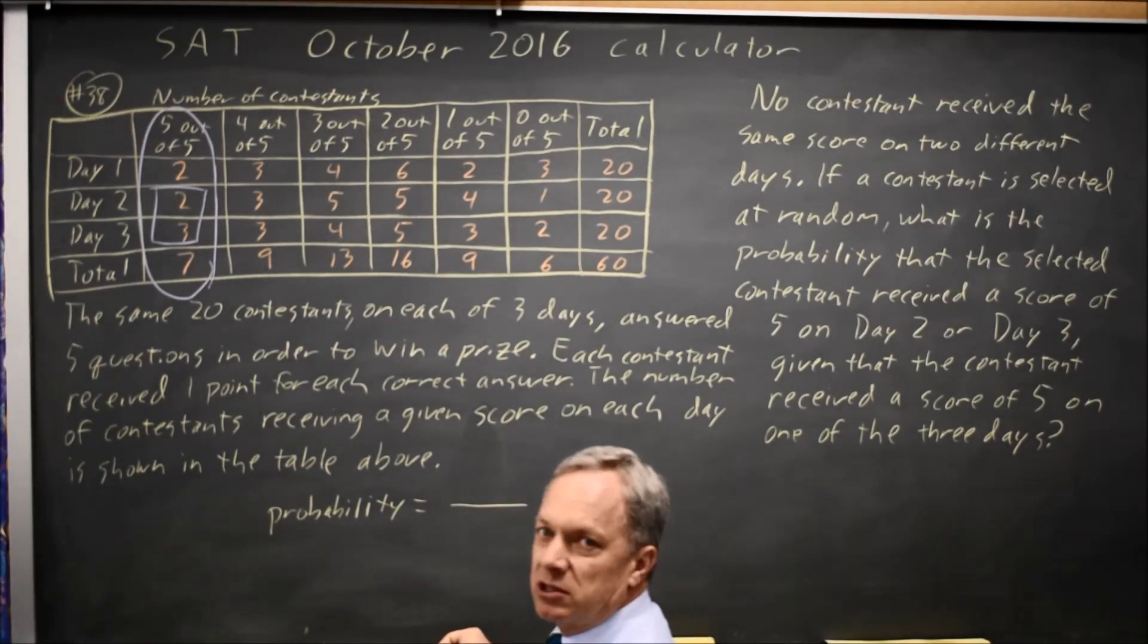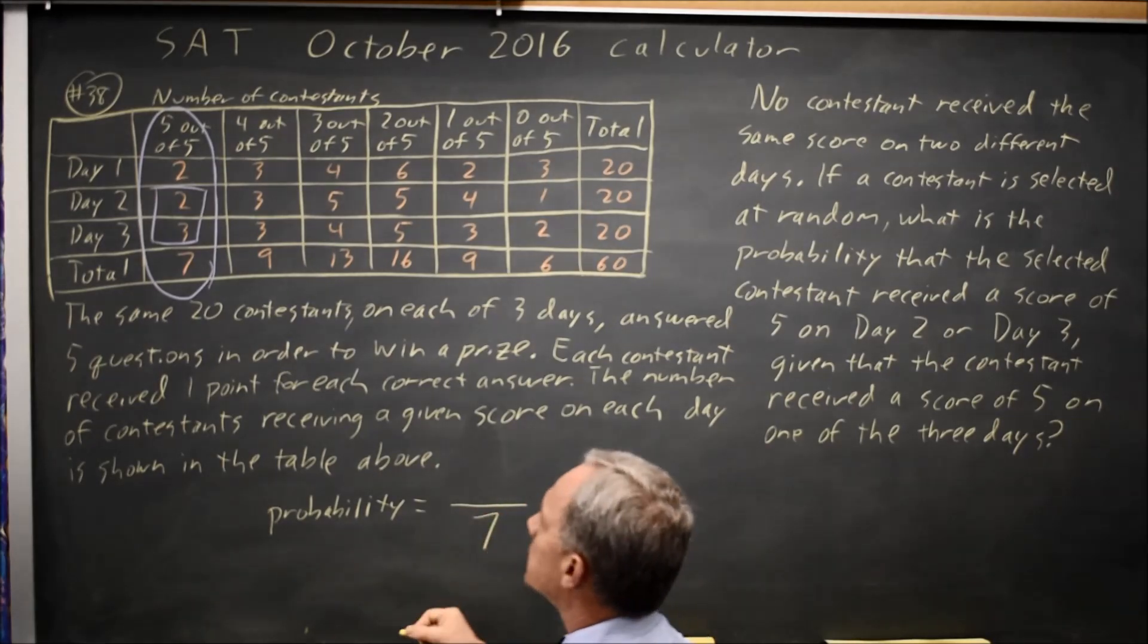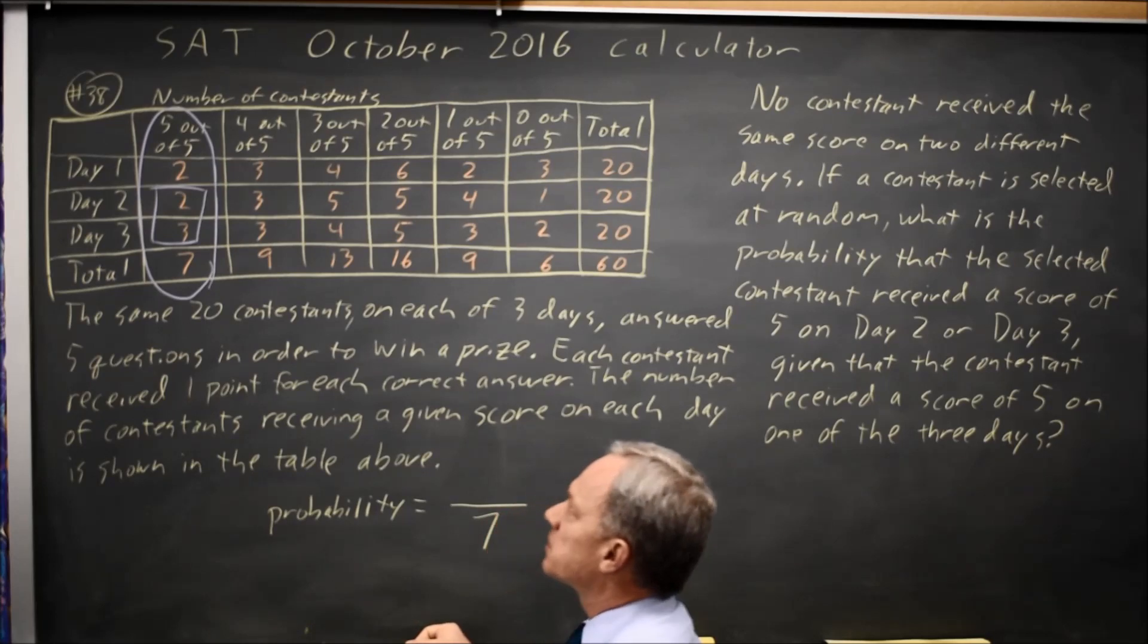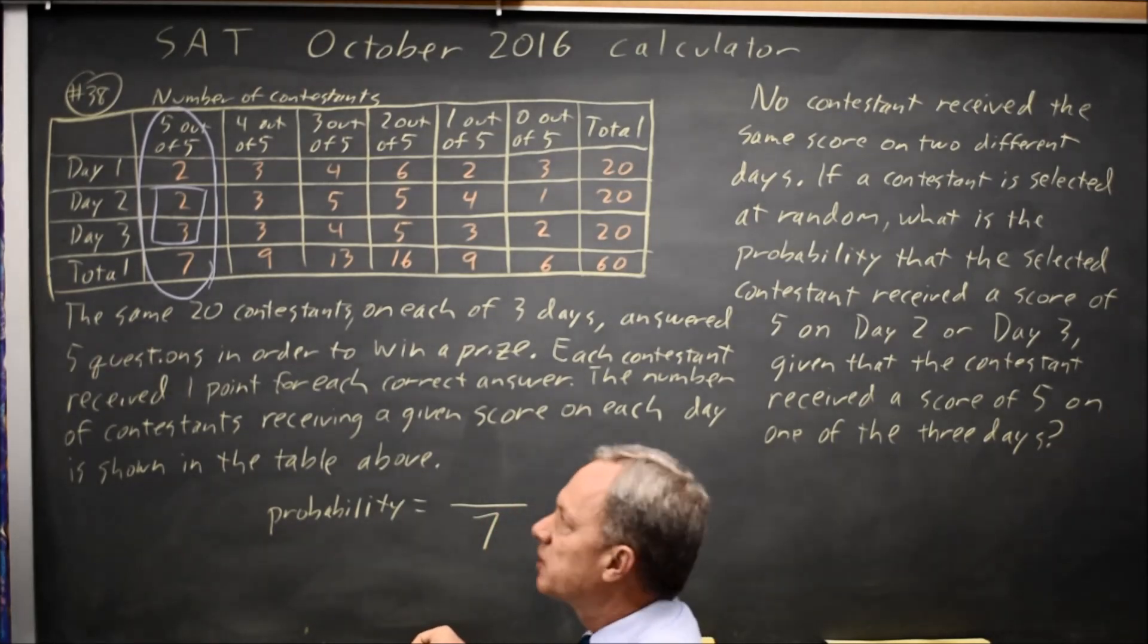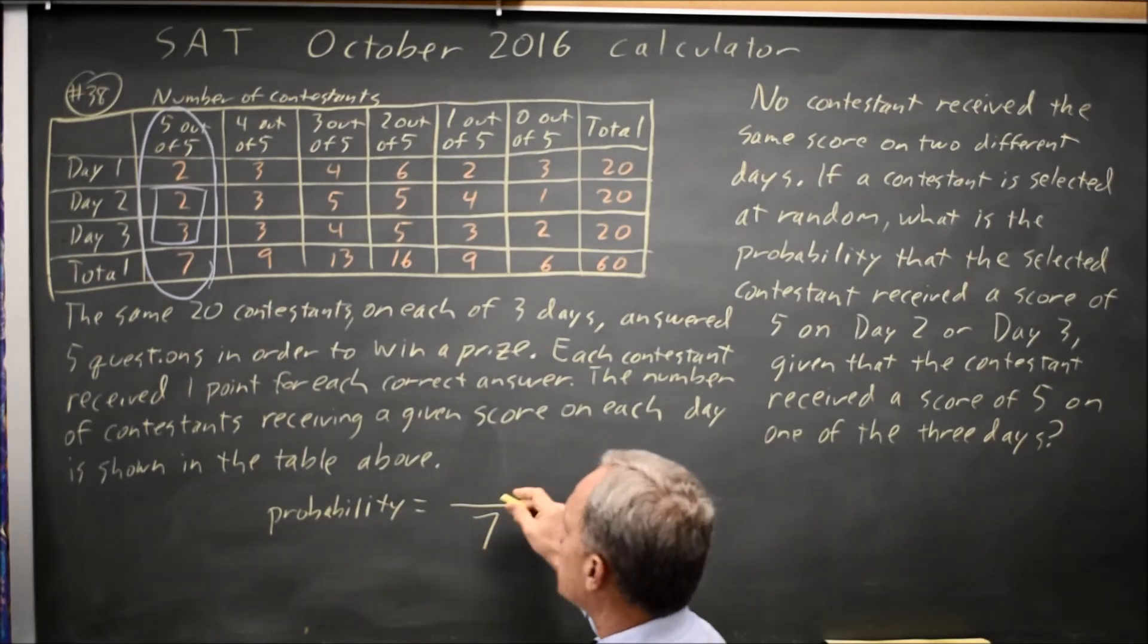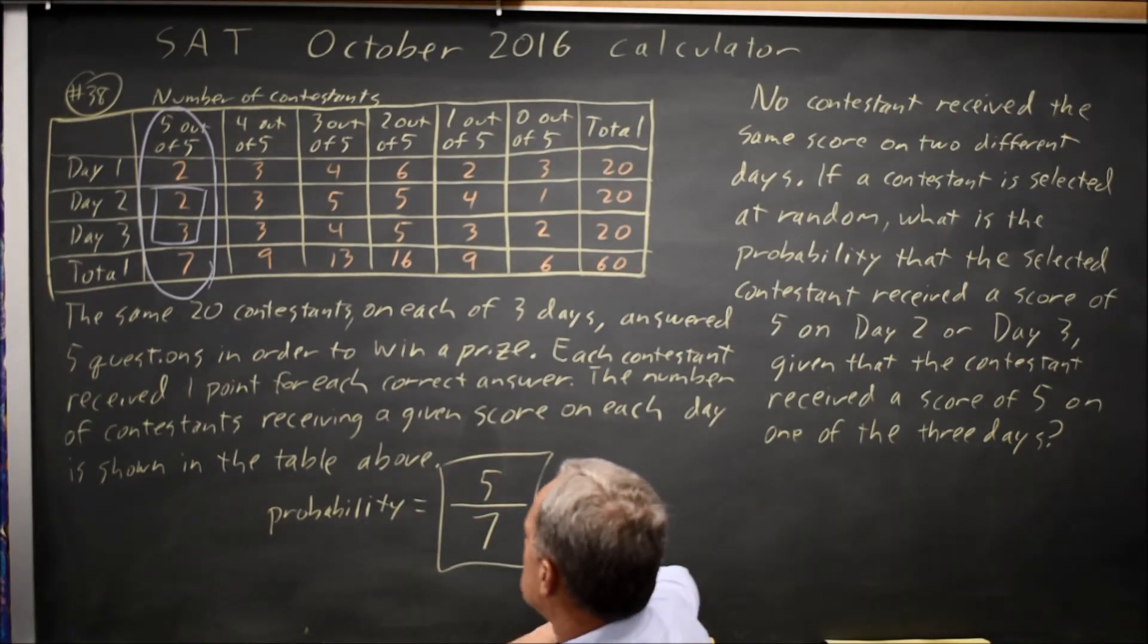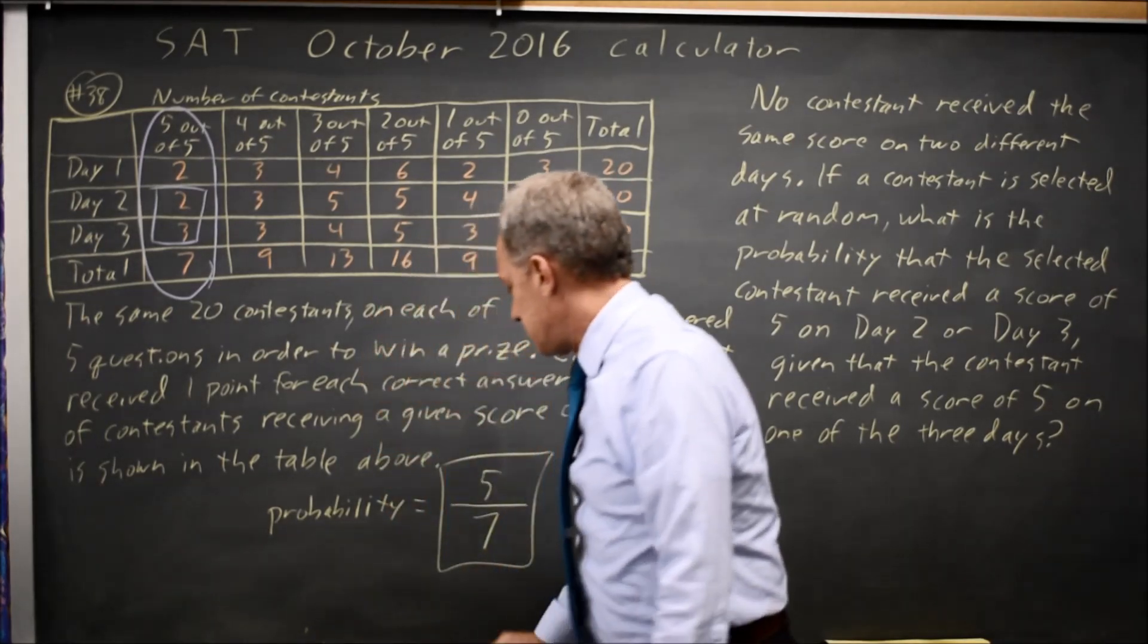Since the total number of contestants who received a score of five is seven, your denominator is seven. Of those receiving a score of five at some point, how many received that score on day two or day three? That is a total of five of the seven contestants. So the answer is five sevenths.